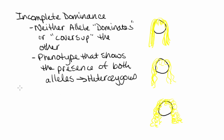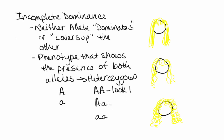If we consider two different alleles — say a capital A and a lowercase a — the possible combinations are: capital A capital A (homozygous dominant), heterozygous (capital A lowercase a), and two lowercase a's (homozygous recessive). Each one of these three combinations is going to have a different look, giving us three different phenotypes from the same two alleles depending on which combination the individual has.